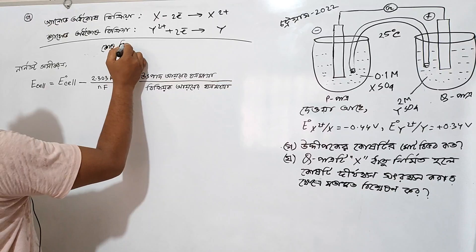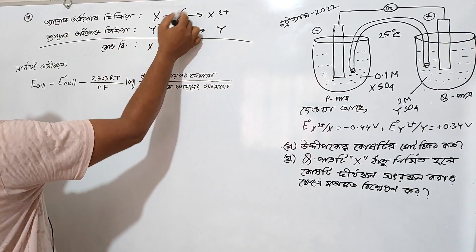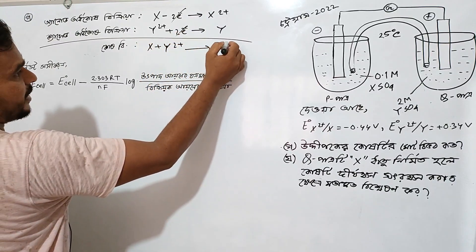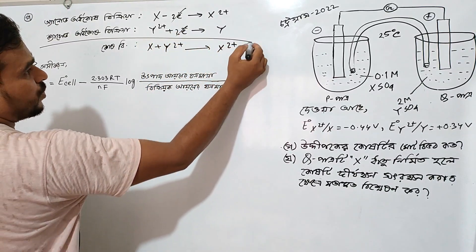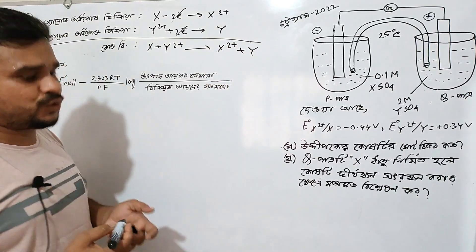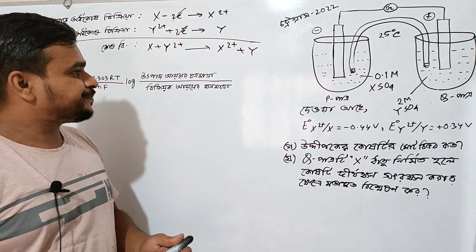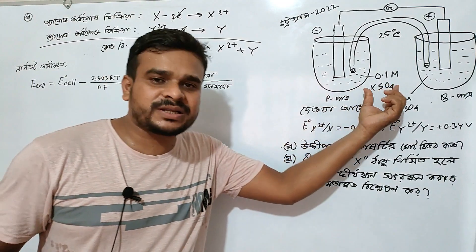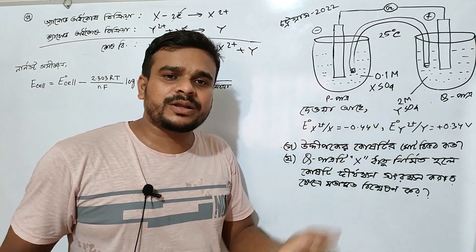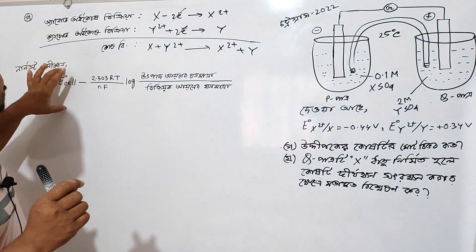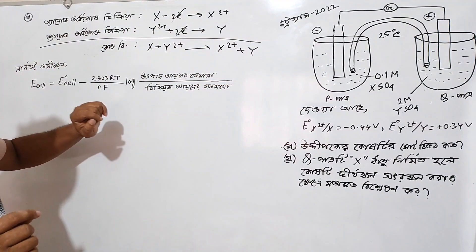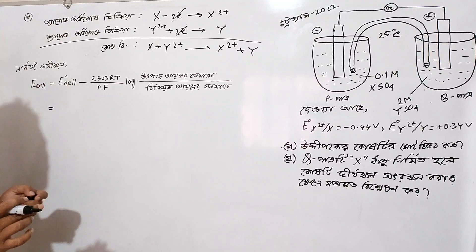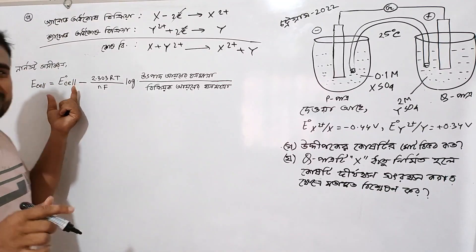Electrochemistry reaction setup: x⁴ plus 2 plus y, total. [Values noted on board: 1, 1, 1, 2, 1, then 1, 1, 1, then 2, 2.]